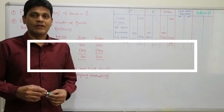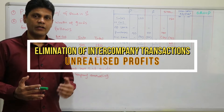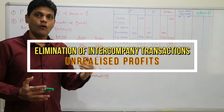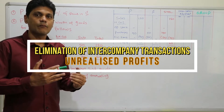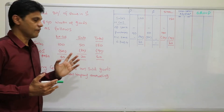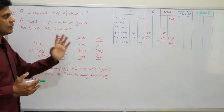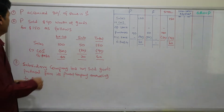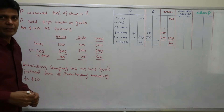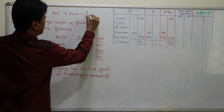Hi everyone, welcome to the session. In this session I'll be discussing how to record elimination of intercompany transactions and also elimination of unrealized profit. Let's move on to this example. P acquired 80% of shares in S company, so S company is a subsidiary company.